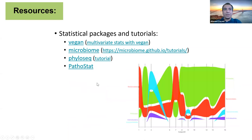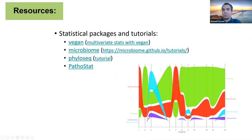Of course there is phyloseq, one of the famous packages, with a link for a tutorial. And there are some less known packages as well. Another example is the package called pathostatic, which gives you a really nice display of the temporal variation in your data — each color representing a different lineage, showing changes in relative abundance across time or across individuals. Try to go through these things and look at what's available before trying to reinvent the wheel.